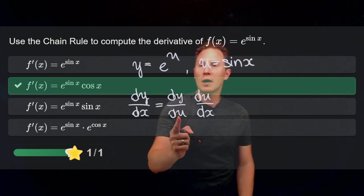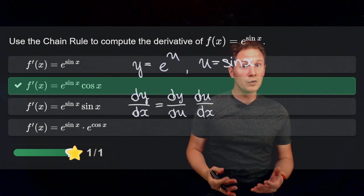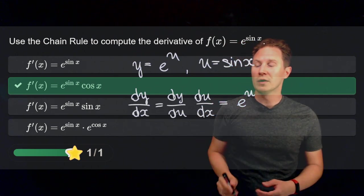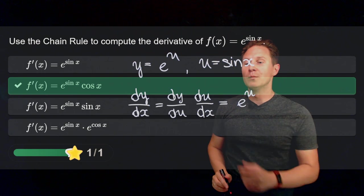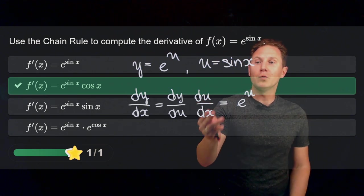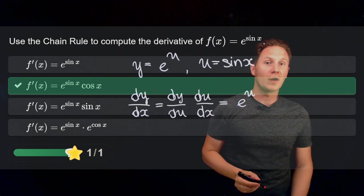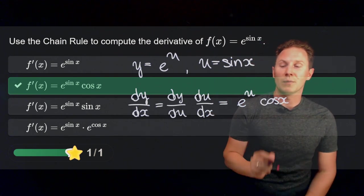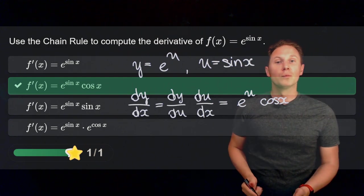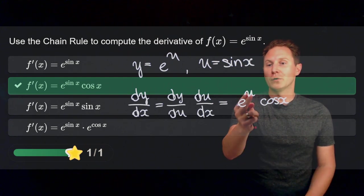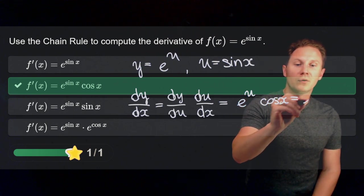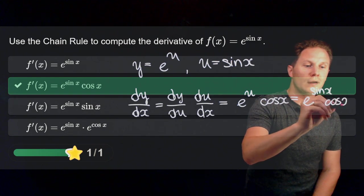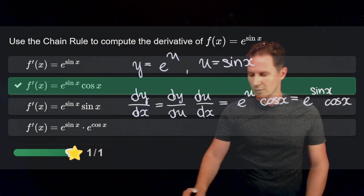dy over du is the derivative of e to the u with respect to u, which is itself according to a basic derivative. This needs to be multiplied by the derivative of u with respect to x, that is the derivative of sine of x with respect to x, which is the cosine of x according to another basic derivative. All that's left is to plug back in for u the sine of x, to get e to the sine of x times the cosine of x for the derivative.